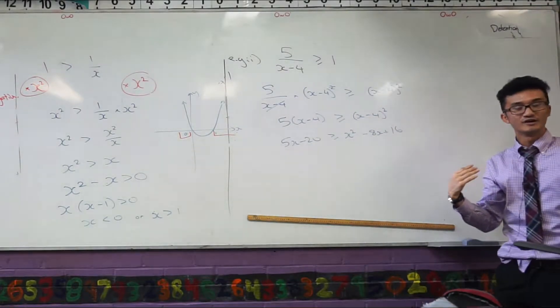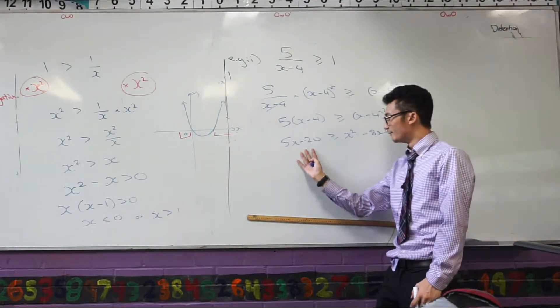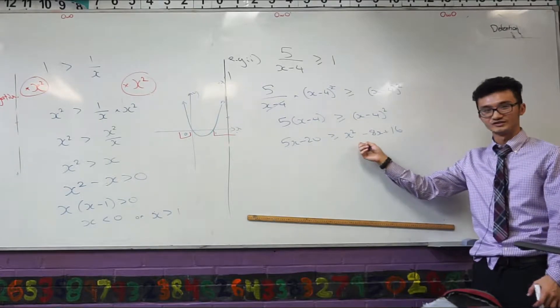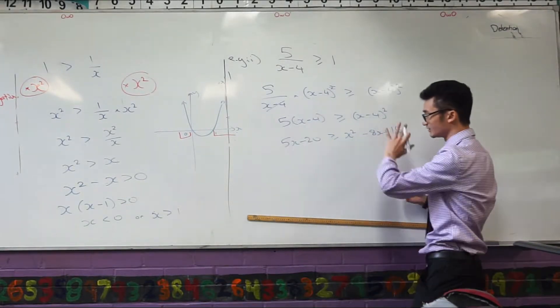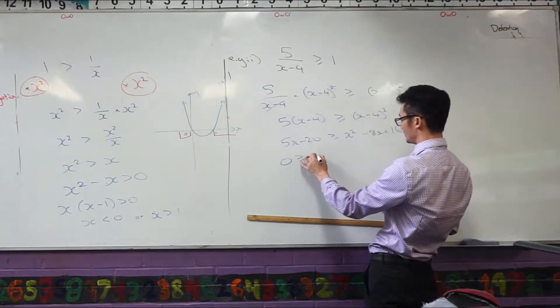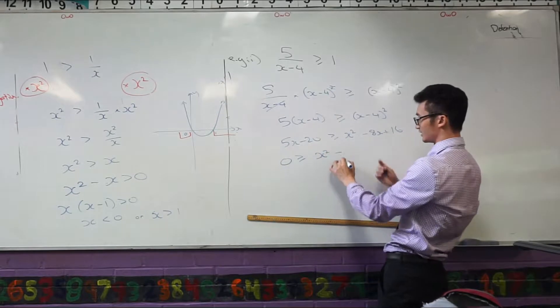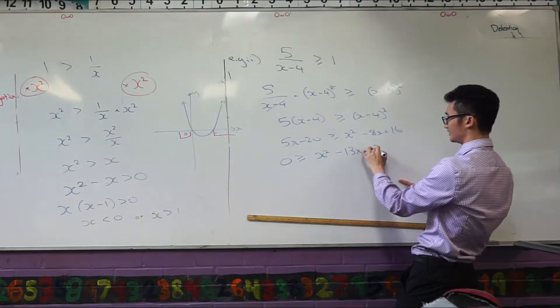Then I want everything to one side. Now usually we have things on the left hand side, right? But because this x squared is positive on this side, I want to move everything to the right here. Move everything to the right. I'll have 0 is less or greater than or equal to x squared minus 13x plus 36.